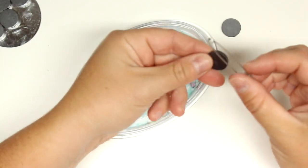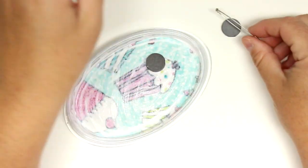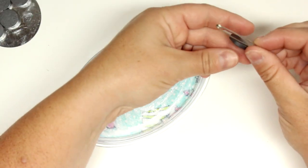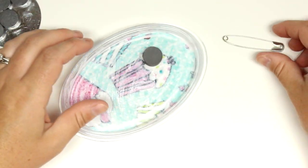So depending on your magnets, one side might attract the metal better than the other side, so you can kind of just test it out. If not, it seemed like these ones, it didn't really matter.